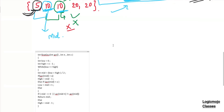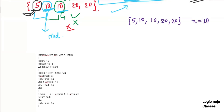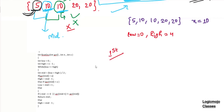Let us do one diagram and make this clear. We have: 5, 10, 10, 20, 20, and X equals 10. Initially, low equals 0, high equals n minus 1, which is 4. In the very first iteration, low is less than high, so we find mid: 0 plus 4 divided by 2 equals 2. Array of mid at index 2 is 10. We go into the else case. Is mid equal to 0? No. Is the element before it — array of mid minus 1 — not equal to array of mid? No, it's equal. So we go to the else and do high equals mid minus 1. High was 4, now it becomes 1.